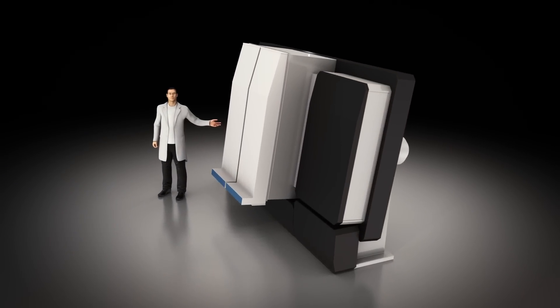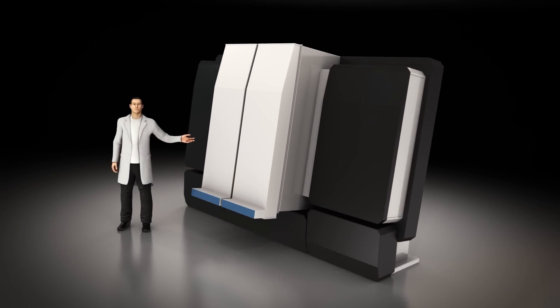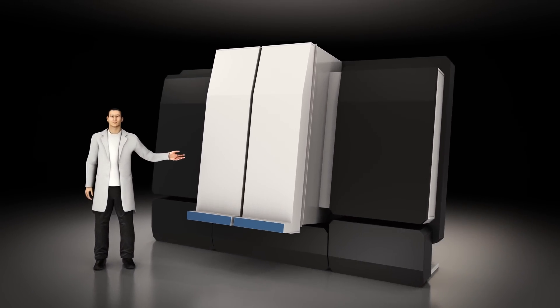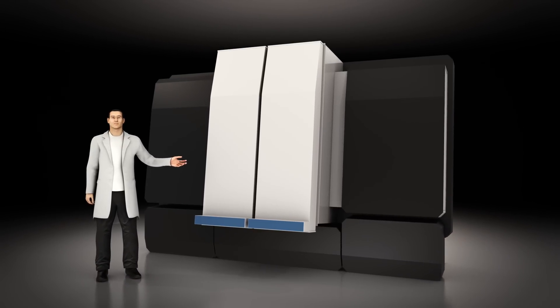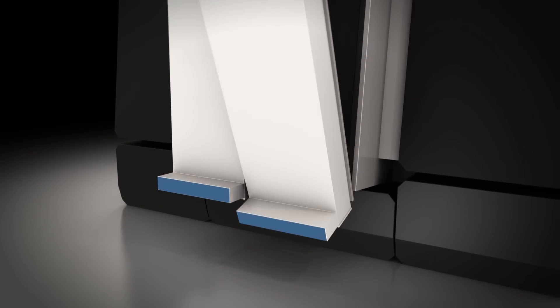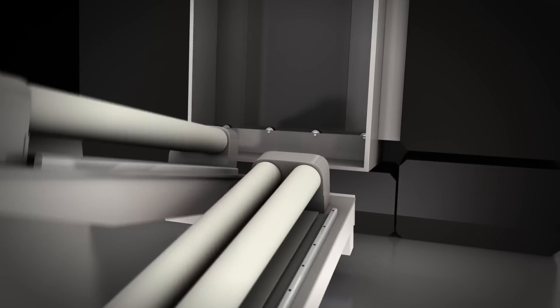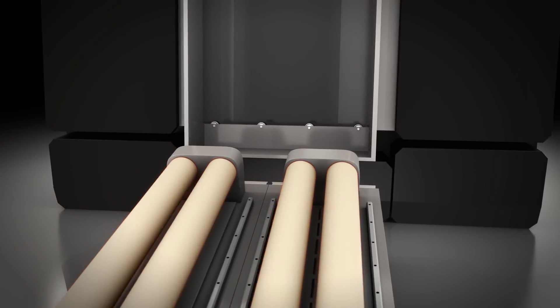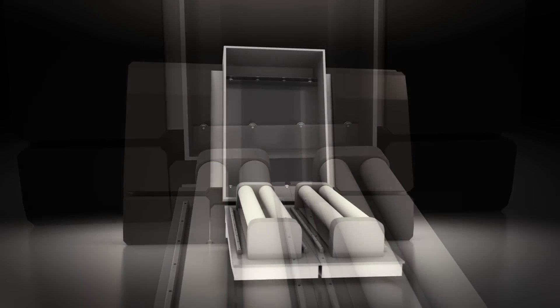Sputtering deposition is done in a vacuum chamber. The most common substrate for the thin layers is glass. The sputter system can have different sizes depending on the application. The source of the thin film material is a planar or rotary sputtering target of metal, ceramic, or even plastic.